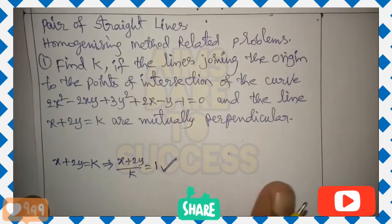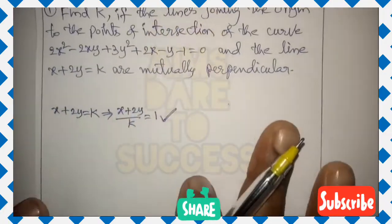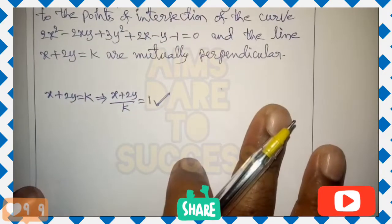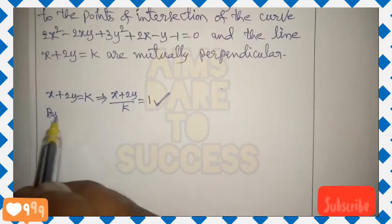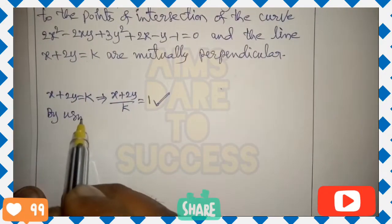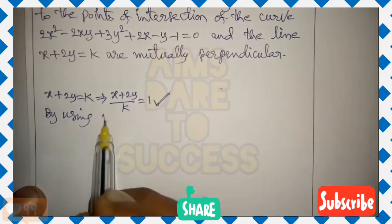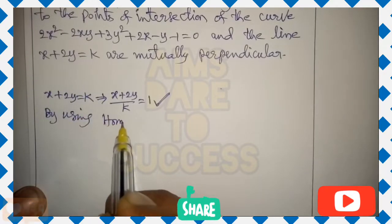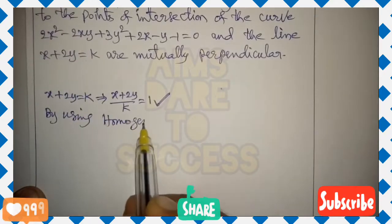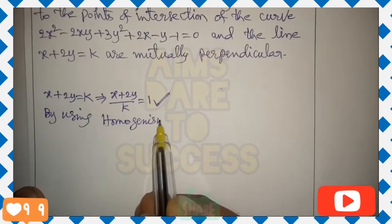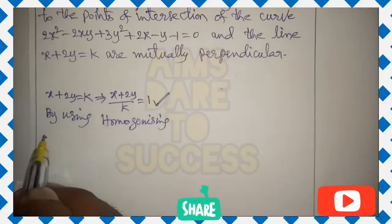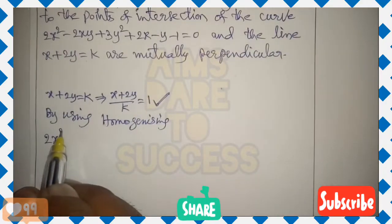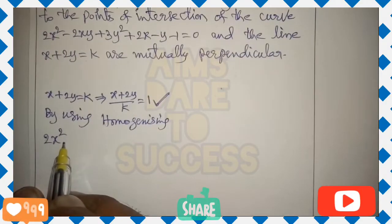According to the given line x + 2y = k, the right side should be 1, so dividing both sides by k we get x + 2y / k = 1. Homogenizing means using the points of intersection of the curve — you can remember this.